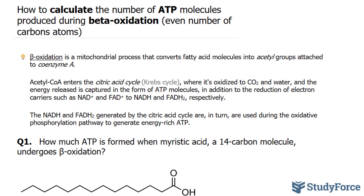In this lesson, I'll show you how to calculate the number of ATP molecules produced during beta-oxidation. This is for fatty acid molecules with even number of carbon atoms. Let's start with a bit of theory, and this part's important. Beta-oxidation is a mitochondrial process that converts fatty acid molecules into acetyl groups attached to coenzyme A.